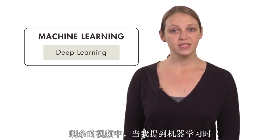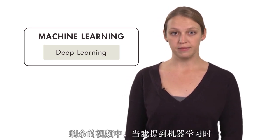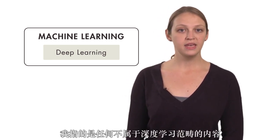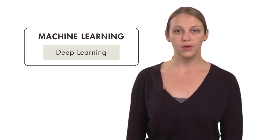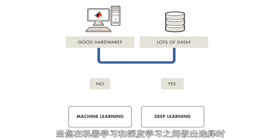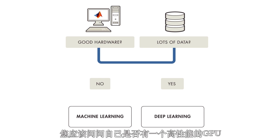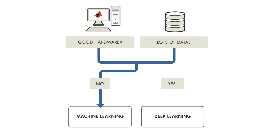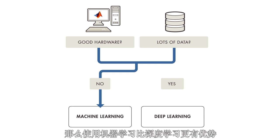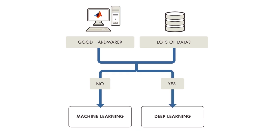For the rest of the video, when I mention machine learning, I mean anything not in the deep learning category. When choosing between machine learning and deep learning, you should ask yourself whether you have a high-performance GPU and lots of labeled data. If you don't have either of these things, you'll have better luck using machine learning over deep learning.